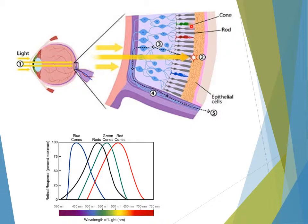The frequency also carries energy, and that's what the cones detect. There are three different chemicals in the cones: one that reacts to green light, one to red light, and one to blue light — which is why those are the three primary colors. When blue light comes in and reacts with the chemical in the cone, it sends electrical impulses up the optic nerve and that's where your brain perceives blue. Your rods also send information up the optic nerve so your brain can perceive vision.